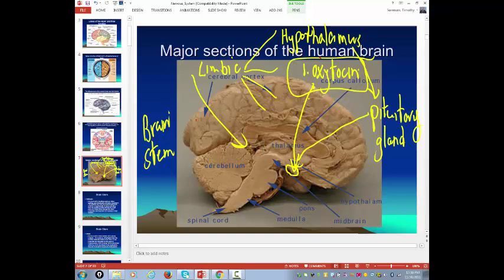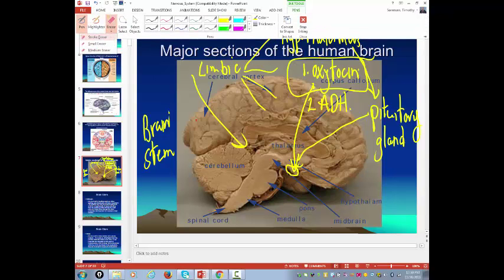The other hormone that it releases is antidiuretic hormone. So the hypothalamus produces antidiuretic hormone, and it gets released by the pituitary gland. So the pituitary gland, even though it's not neural, it is considered part of your limbic system.